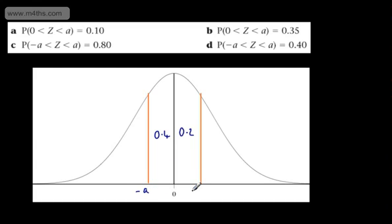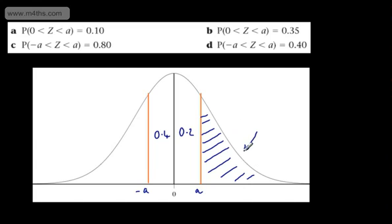So this is going to be minus A and this is going to be A. We know our percentage points table will give us the area trapped under the curve to the right of A. All I'm doing is looking at that value — the probability that Z is greater than A — and that is going to give us 0.3, since all of the area to the right of 0 is half.